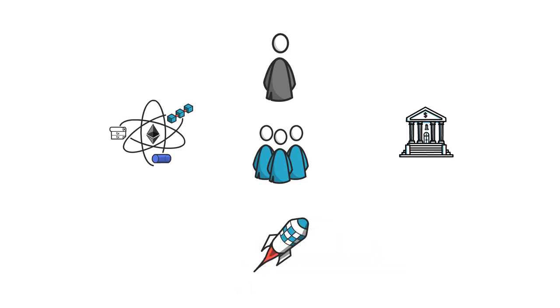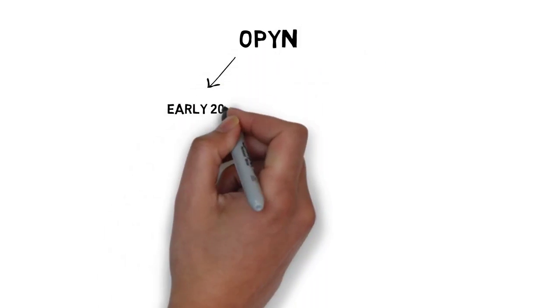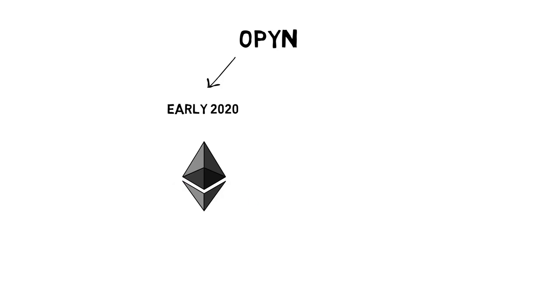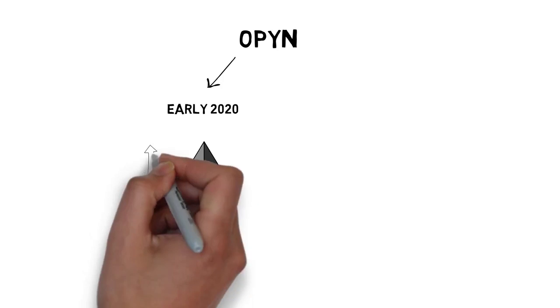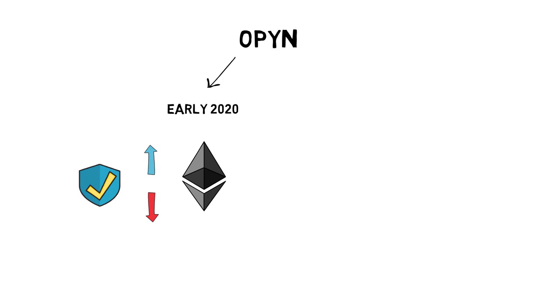Another DeFi project that allows for trading options is Opyn. Opyn, launched in early 2020, started from offering ETH downside and upside protection, which allowed users to hedge against ETH price movements, flash crashes and volatility.